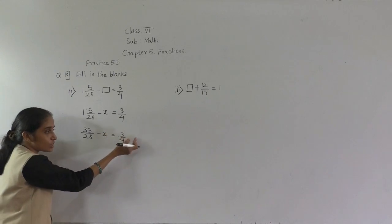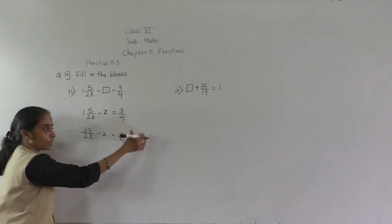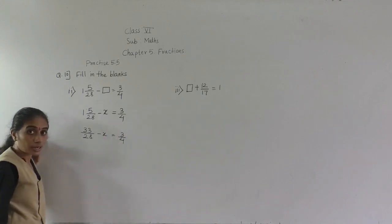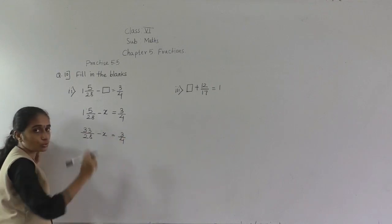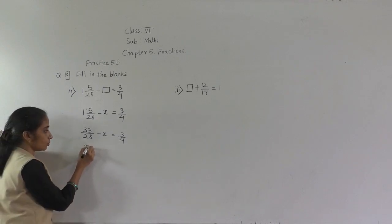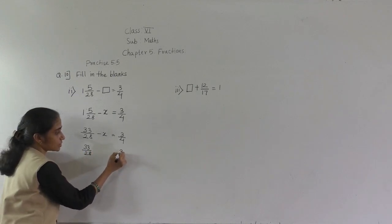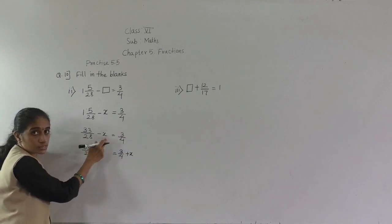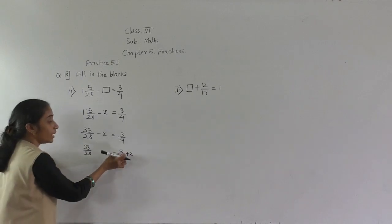Either you can shift x to the right-hand side, or you can shift this number to the right-hand side — it is up to you. What I will do: I will shift x to the right-hand side. x is here with minus. If we transfer it to the right-hand side, then it will become plus. So 33 upon 28 is equal to 3 upon 4 plus x.